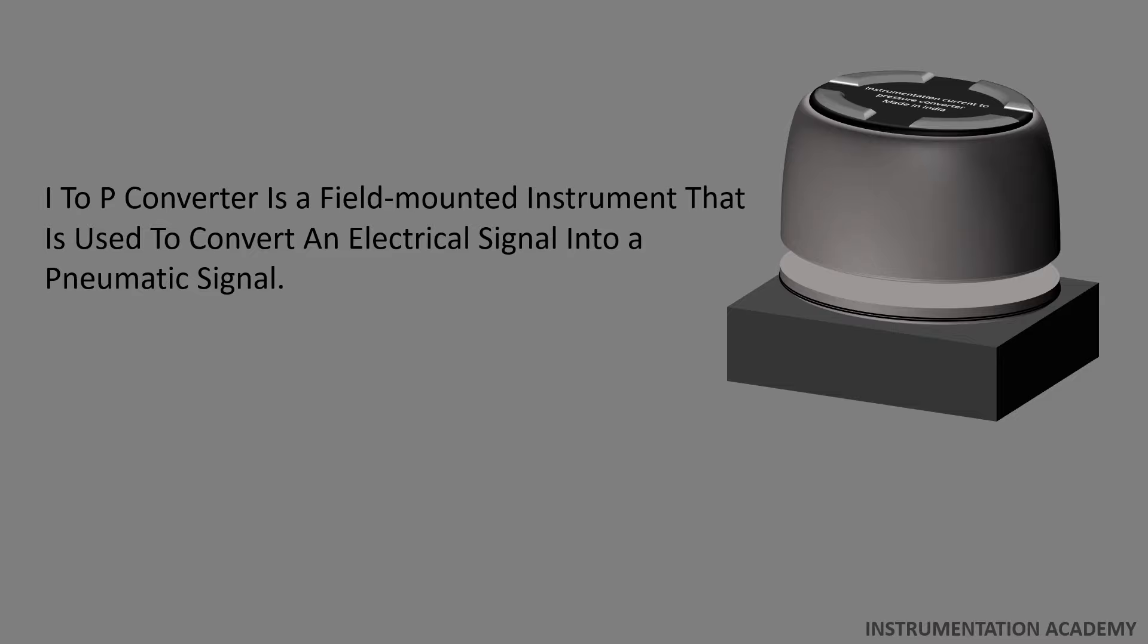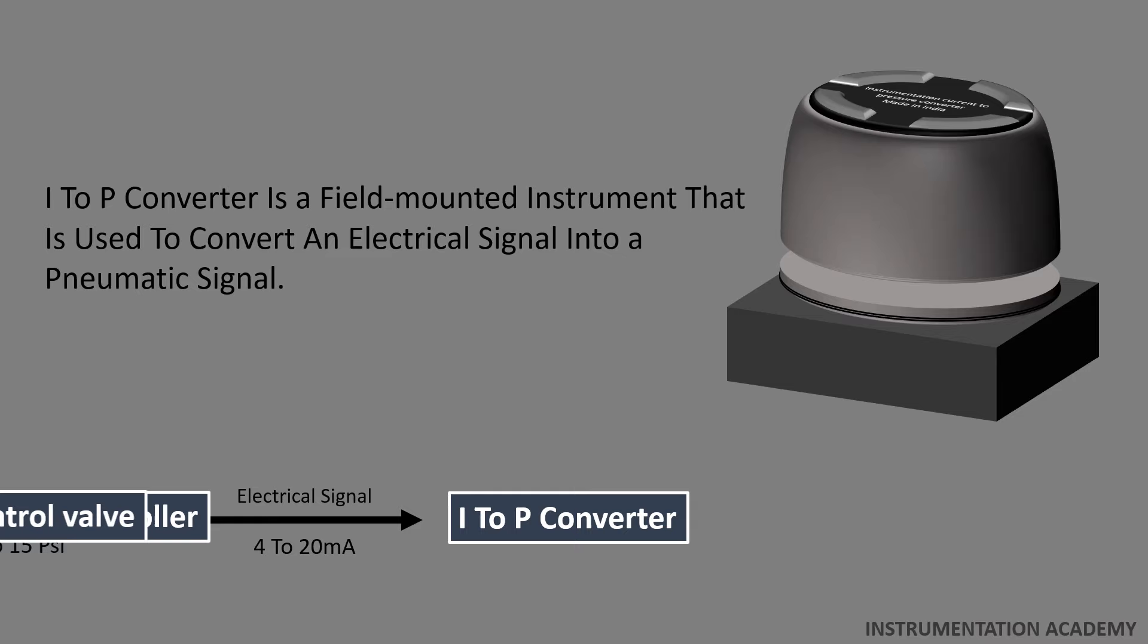In a process plant, I2P converter usually converts an electrical signal of 4 to 20 milliampere from a controller into an air pressure signal of 3 to 15 psi, which is used to operate a pneumatic control valve or positioner.